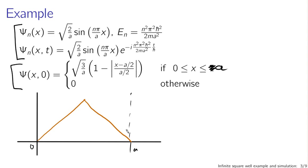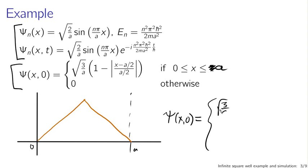Our general procedure suggests expressing this initial condition in terms of stationary state wave functions with their time dependence. To make it easier to work with, let's get rid of the absolute values by expressing psi of x at t=0 as a three-part function. For the first half, 0 < x < A/2, we have root(3/A) times 1 minus (A/2 minus x) over (A/2), since in this range A/2 minus x is positive.